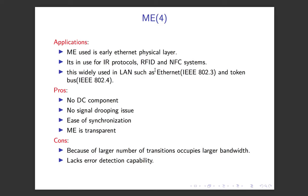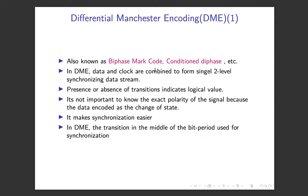There are some drawbacks of Manchester encoding as well. Because of the large number of transitions, it occupies a larger bandwidth. Also, if there is a sudden change in polarity, a zero may be interpreted as a one on the receiver end. It lacks any kind of error detection mechanism if such events occur in the system.